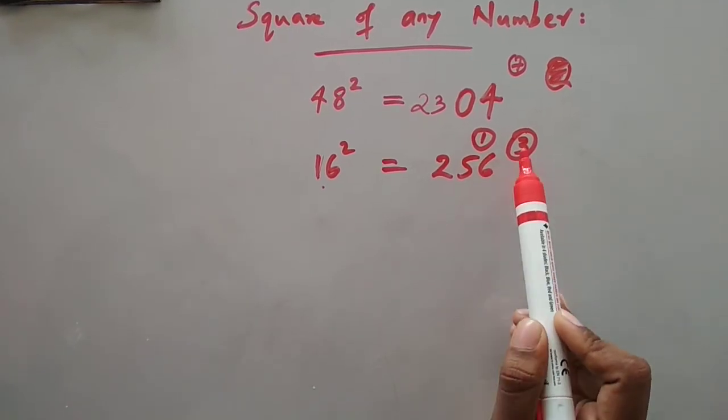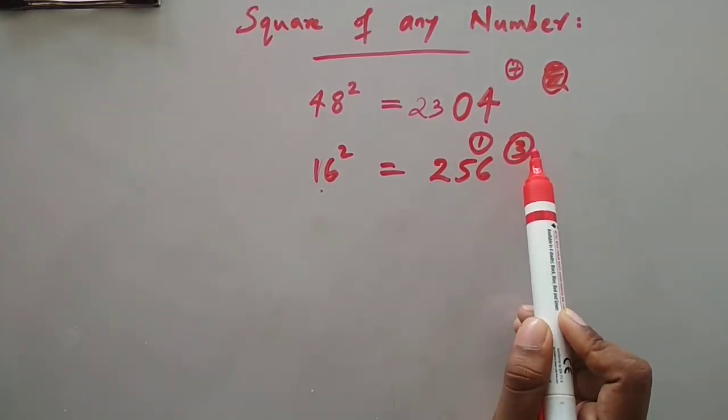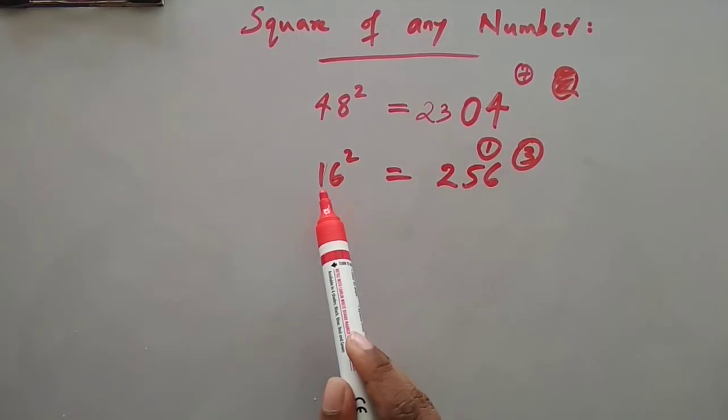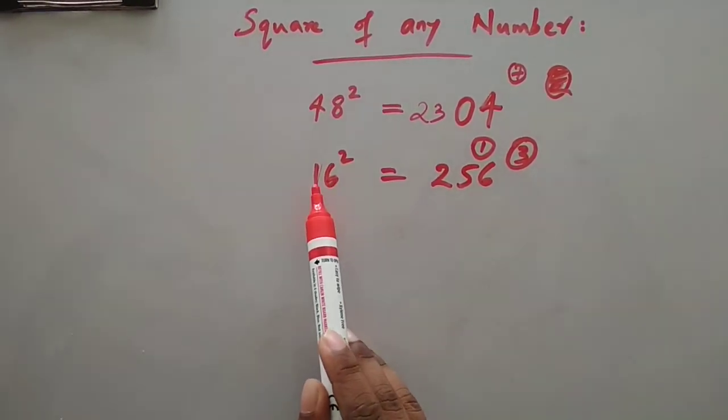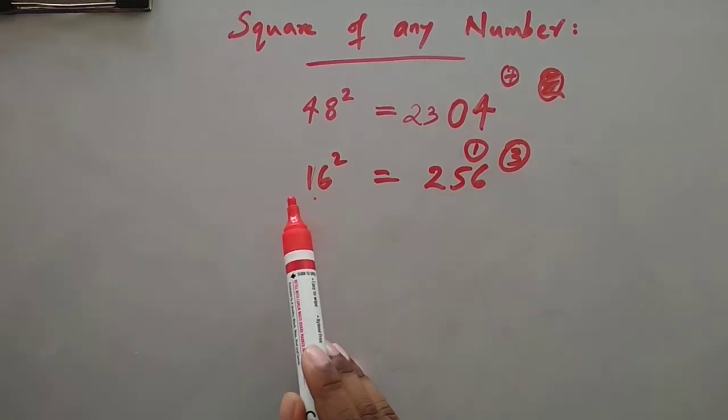We will write the 1's digit here and we will keep 3 aside to be carried off. Then we will find the smaller number between 1 and 6, that is 1.